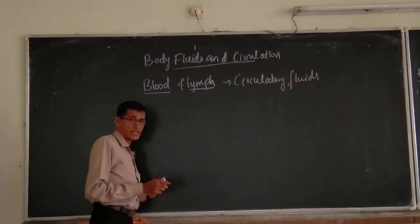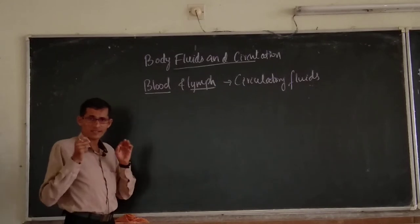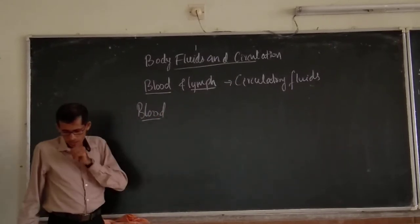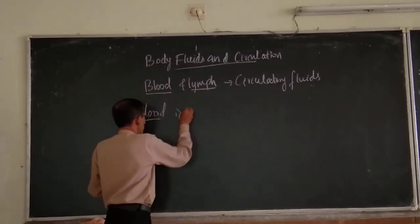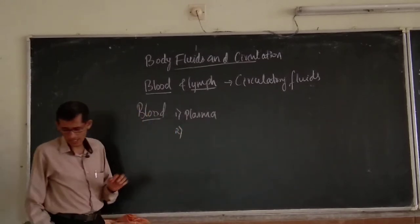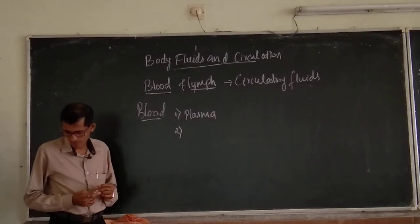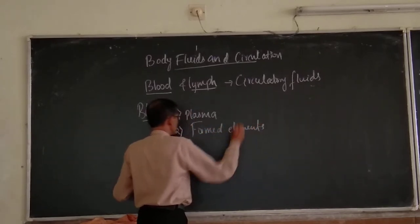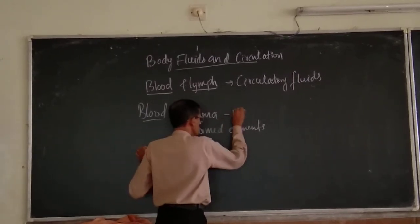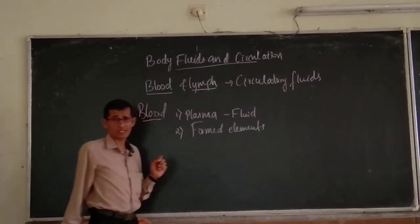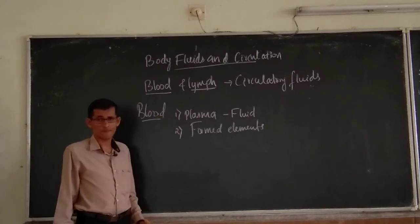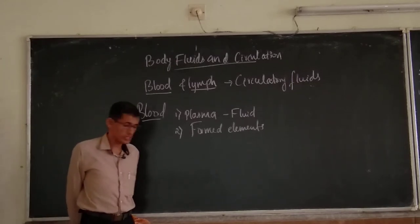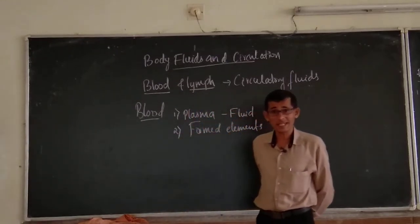Let us take an elaborated study of blood with respect to its components. Blood has two main parts: one component is plasma, and the other is formed elements. Plasma is the fluid matrix — it is the liquid content of the blood, considered as plasma.